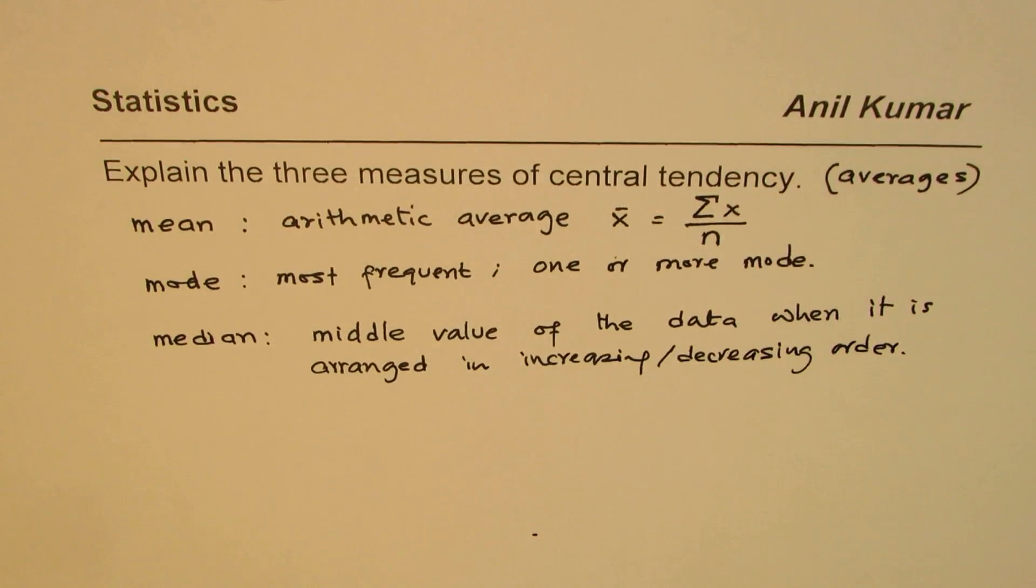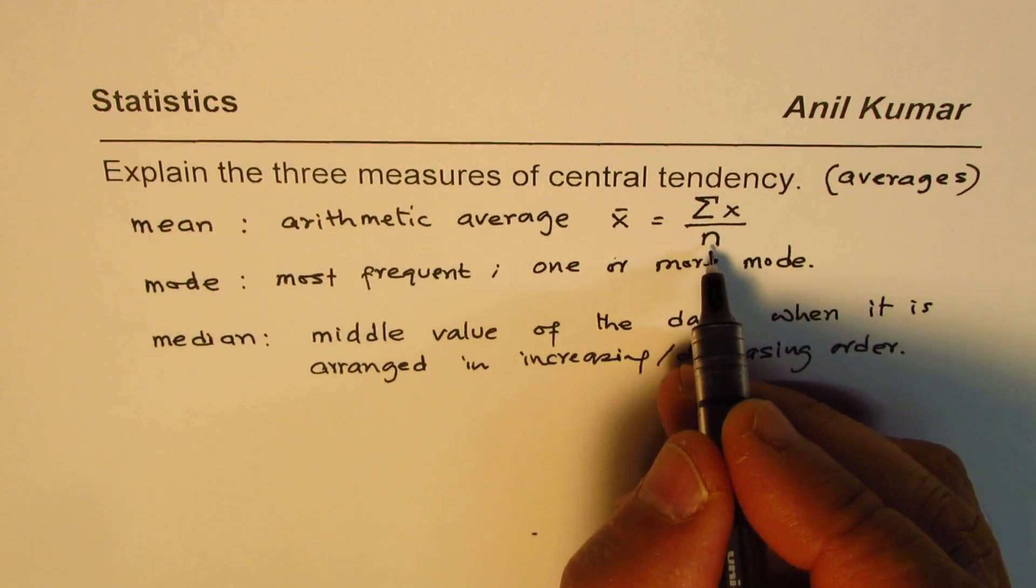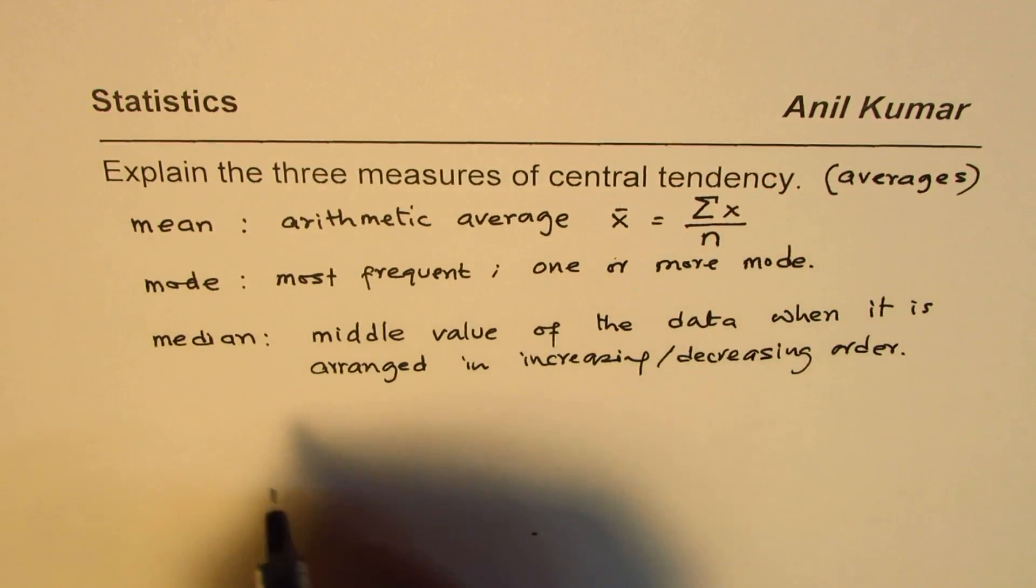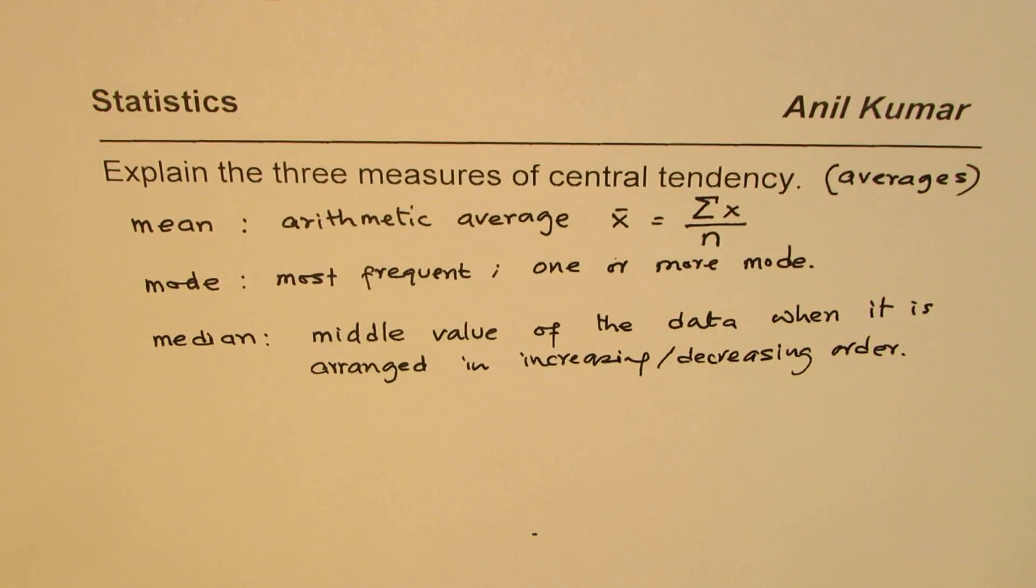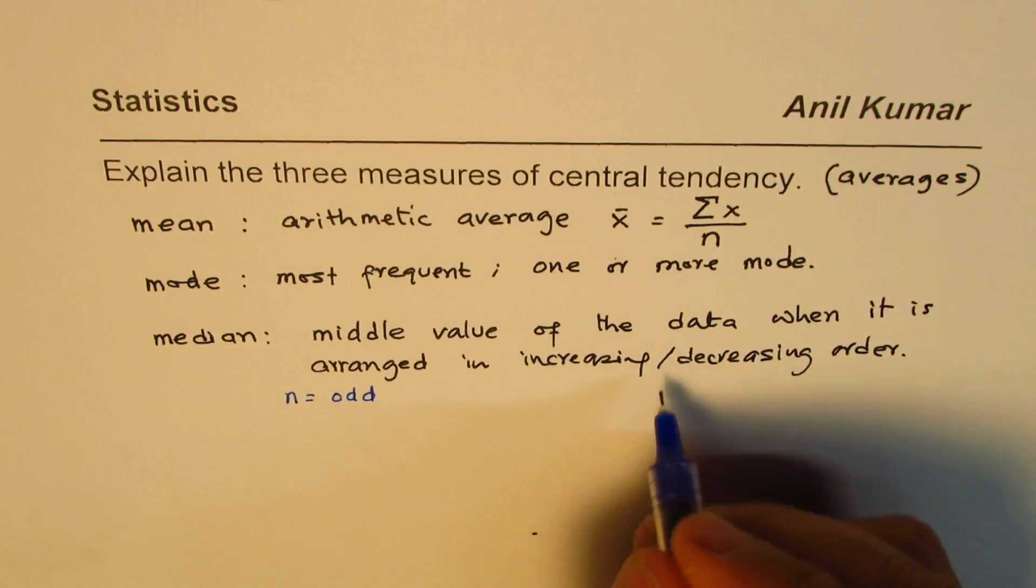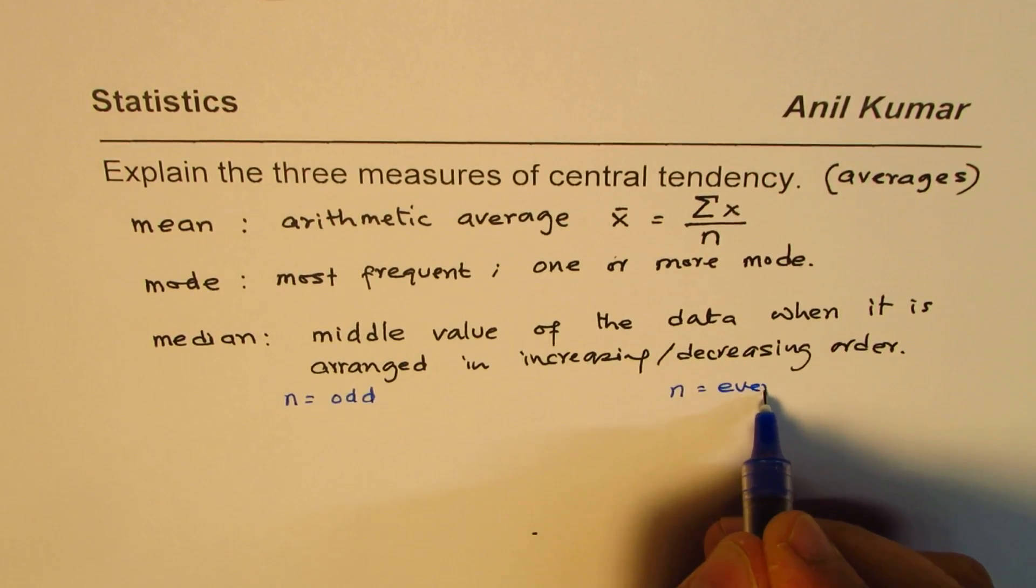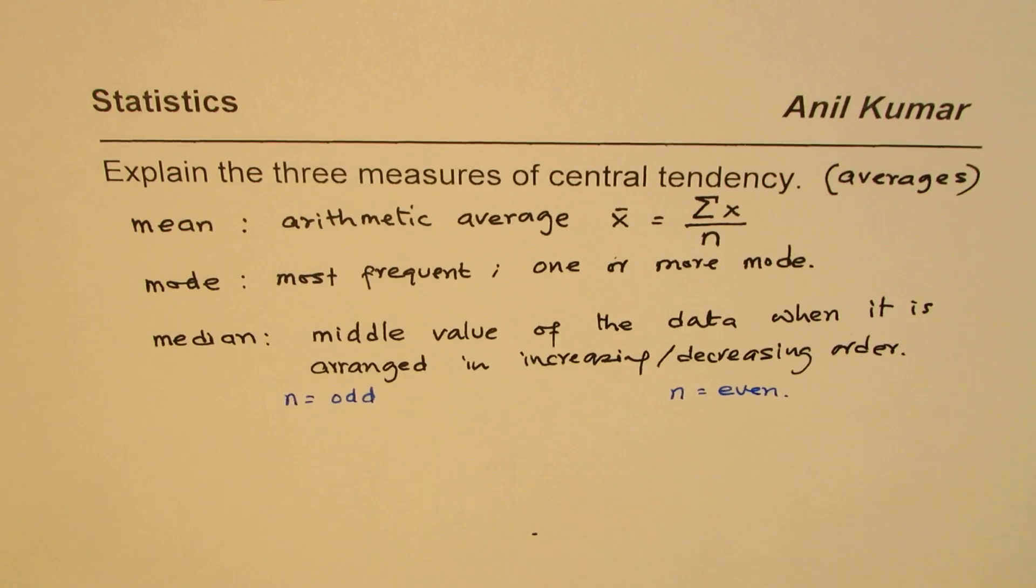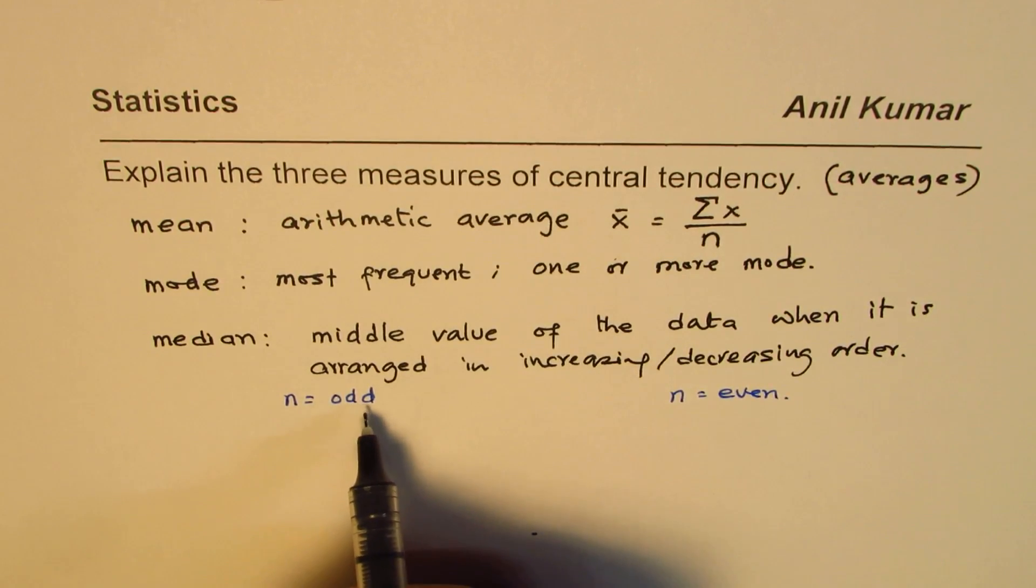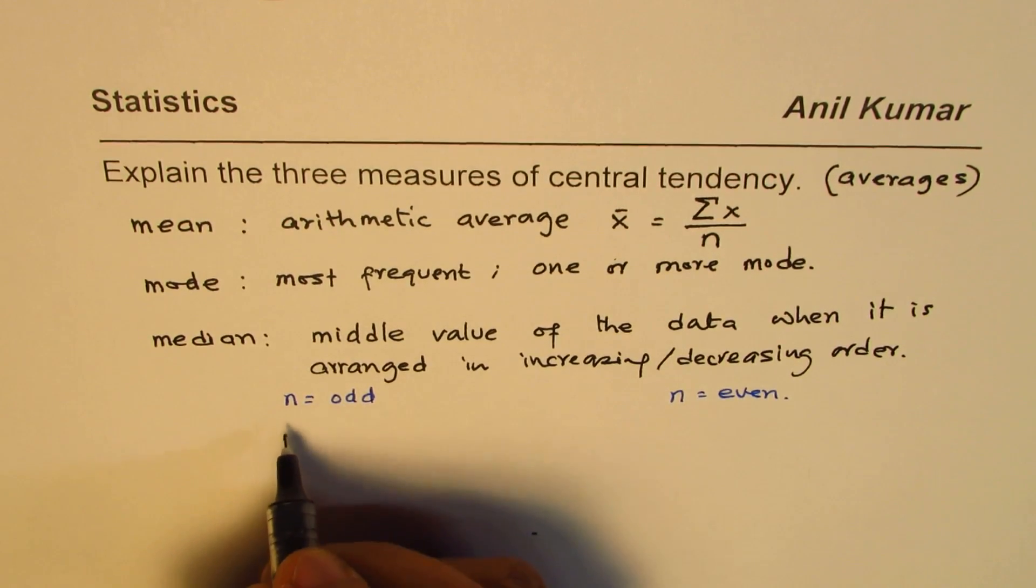There are two cases here. One is if n equals an odd number, and the other one is if the total number of elements is even. If n is odd, let's say 9 or 11 or something like that, then you have a unique middle value.